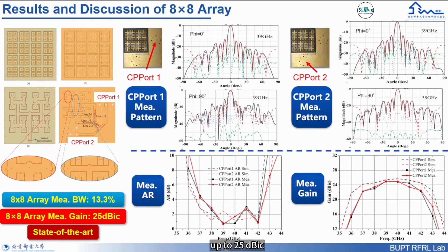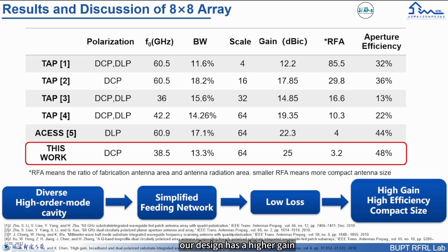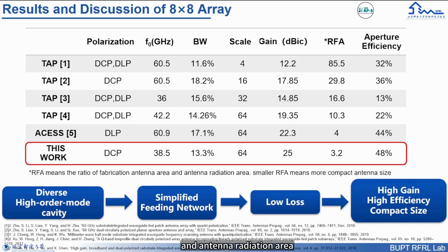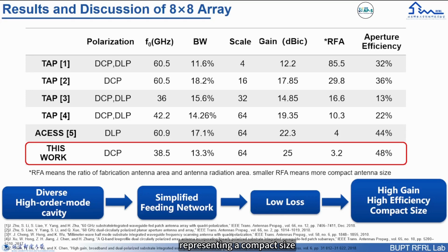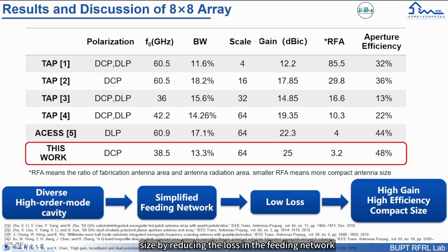The measured gains of the two ports are almost the same, up to 25 dB. In this slide we compare this work to other works at the same scale. Our design has a higher gain. R-AFE means the ratio of fabrication antenna area to antenna radiation area — a smaller R-AFE means a more compact size. Because of the high order mode, our design has the smallest R-AFE, representing a compact size. The proposed antenna also has a higher aperture efficiency. In a word, the high order mode cavity simplified the feeding network, leading to high gain, high efficiency, and compact size by reducing loss in the feeding network.